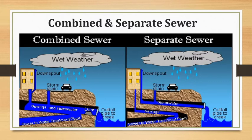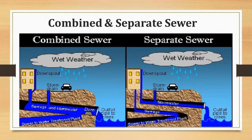Considering land disposal requirements, in the water carriage system the land required for disposal of treated sludge is less, whereas in the conservancy system, land required for disposal of untreated sewage is large. Regarding cost, the water carriage sewage system has a high initial cost but very low running cost due to less labor requirement.